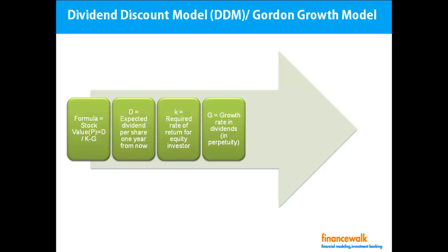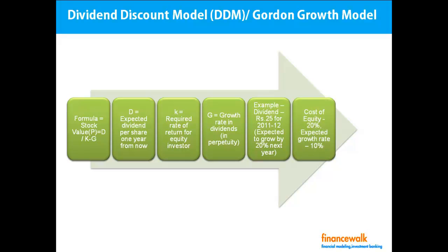For example, ABC Limited gave rupees 25 dividend for year 2011-12 and is expected to grow it by 20 percent next year. Cost of equity is 14 percent and expected growth in dividend is 10 percent forever. So DDM here is equal to 30 divided by 0.14 minus 0.10, which equals rupees 750.